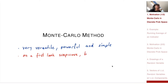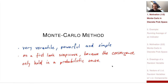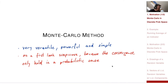The convergence result, which we will look at, only holds in a probabilistic sense. So you really don't know if the method works — you really don't know if your calculation achieved the right result. That's a bit strange. However, this probabilistic nature is not a bug, it's a feature, and we will see that later.